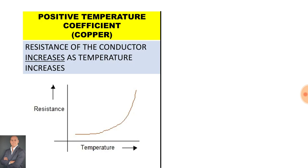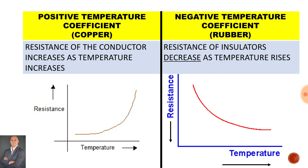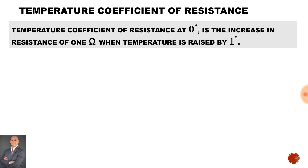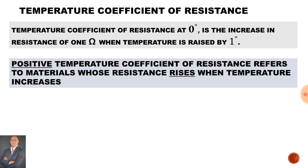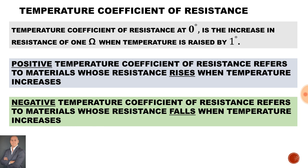Positive temperature coefficient means that the resistance of the conductor increases as temperature increases. Negative temperature coefficient — such as an insulator like rubber — means resistance decreases as temperature rises. The temperature coefficient of resistance at 0 degrees Celsius is the increase in resistance of 1 ohm when temperature is raised by 1 degree. Therefore, a positive temperature coefficient refers to materials whose resistance rises with temperature, while negative temperature coefficient refers to materials whose resistance falls when temperature increases.